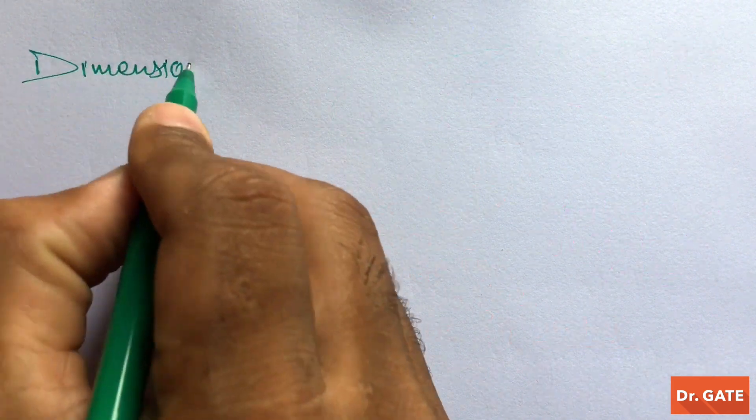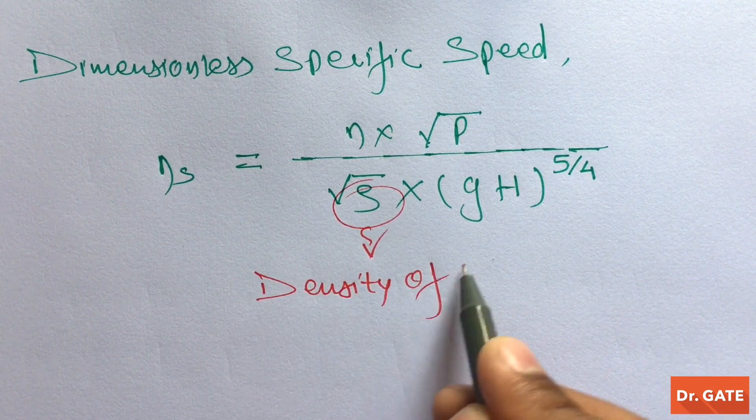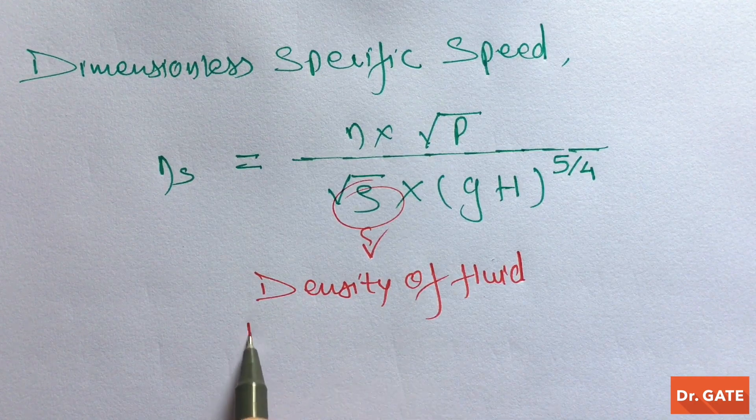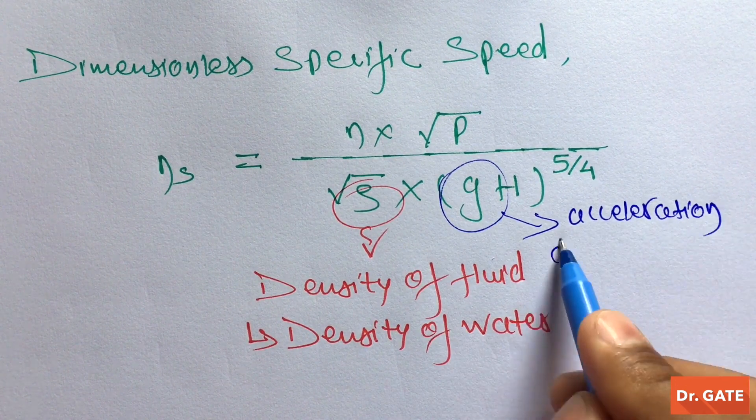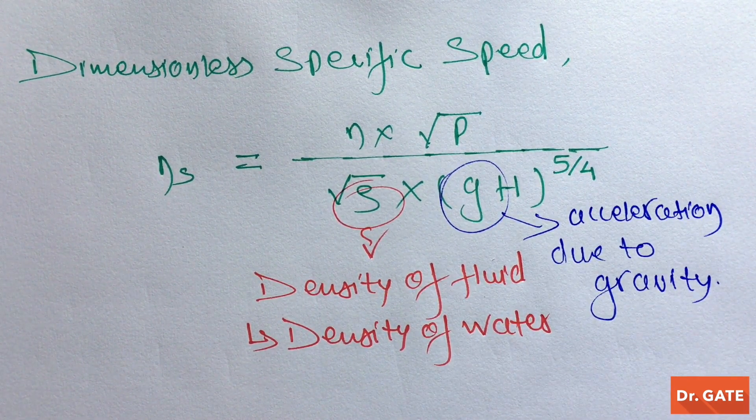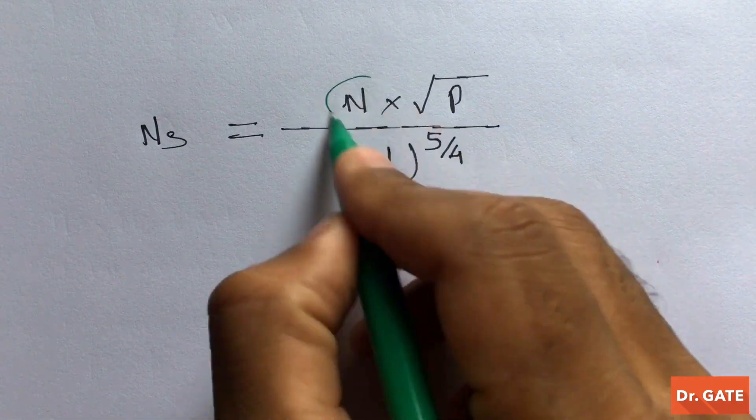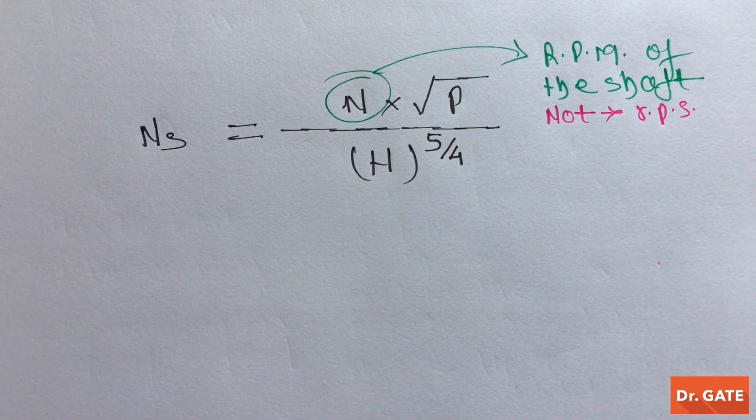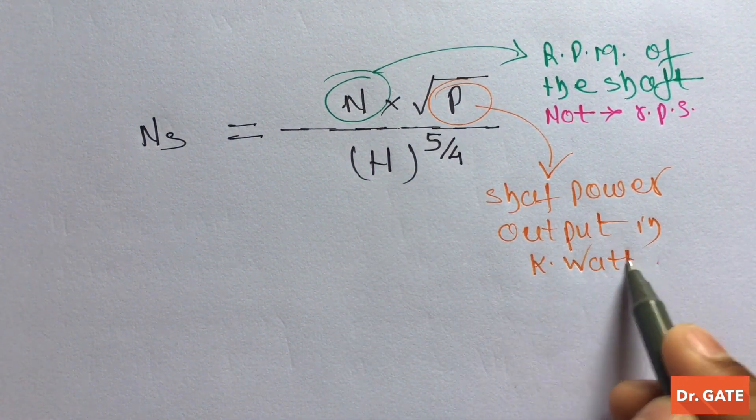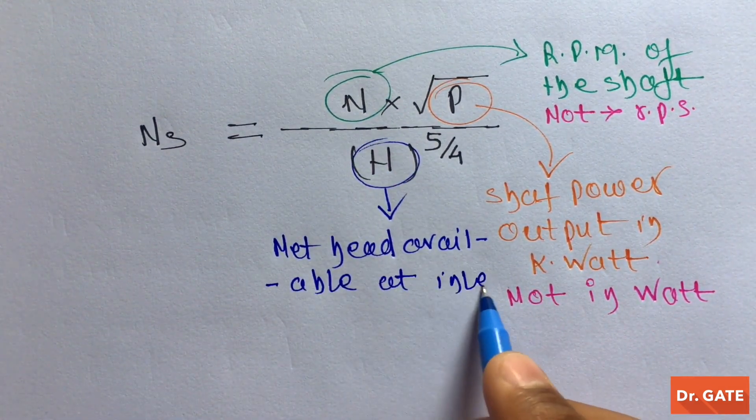So, the expression for dimensionless specific speed is this. Where this one is density of the fluid. In case of water turbine, it is simply the density of water. And this one is the acceleration due to gravity. In the working range of hydraulic turbine, these two are almost constant. That's why we can eliminate these two and can write this. Where this is the RPM of the shaft, not RPS. And this is the shaft power output in kilowatt, not in watt.